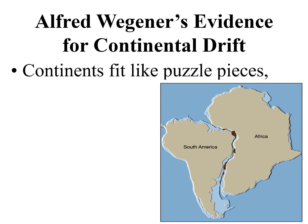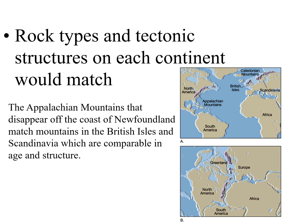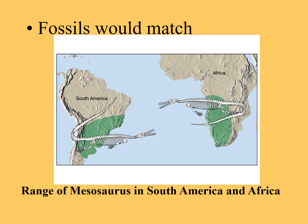Wegener had four pieces of evidence for continental drift. Number one: the continents fit like puzzle pieces. Number two: rock types and tectonic structures — mountains would match on each continent. Notice the mountains in Norway connect with the mountains on the east coast of the US; they are the same mountains. Number three: fossil ranges would match — for example, the range of the Mesosaurus fossil in South America and Africa.